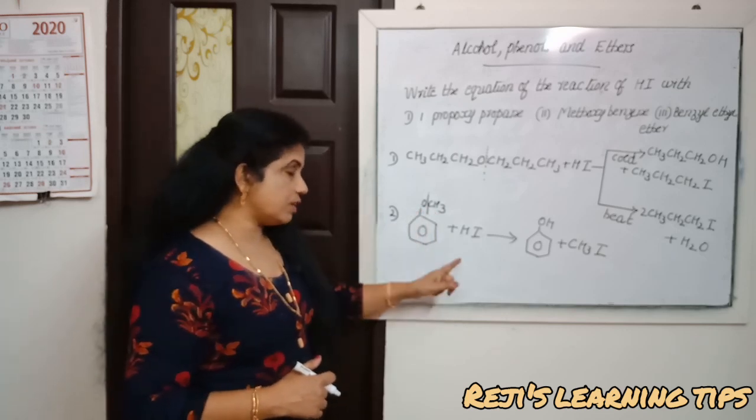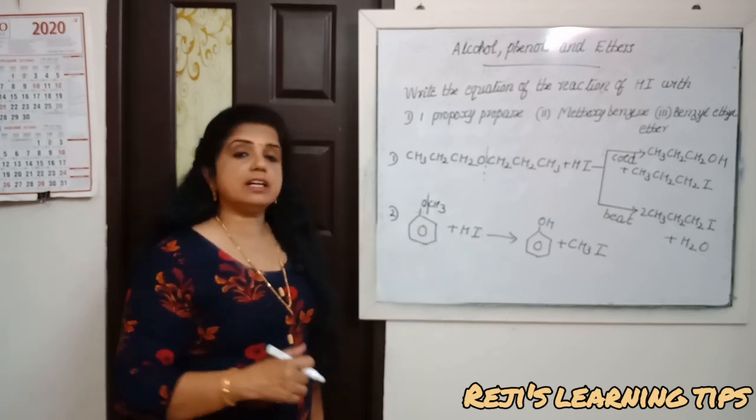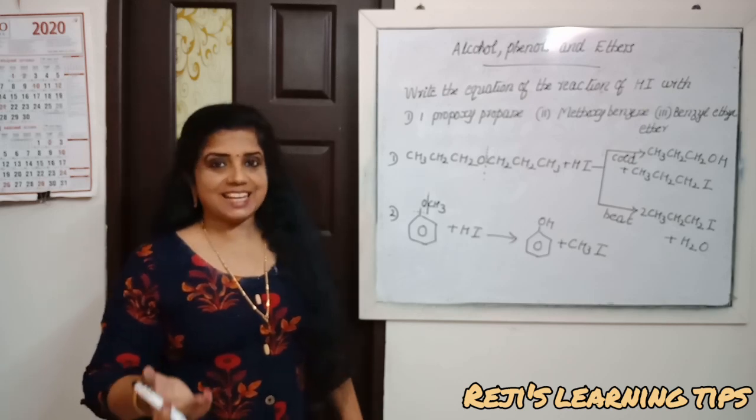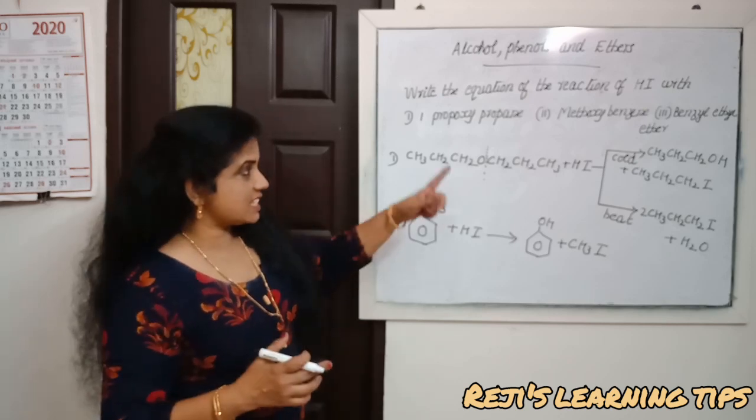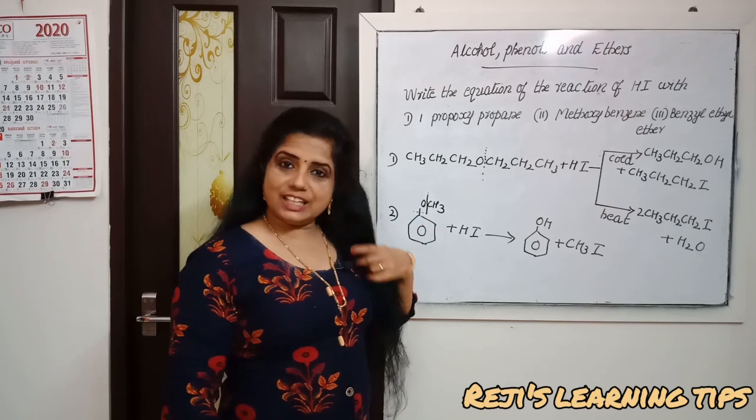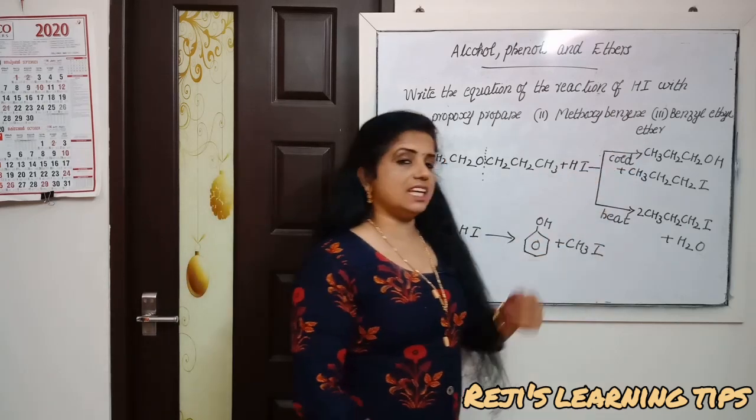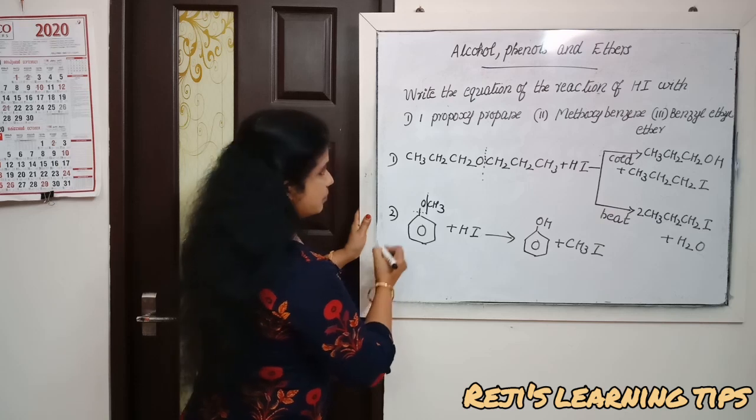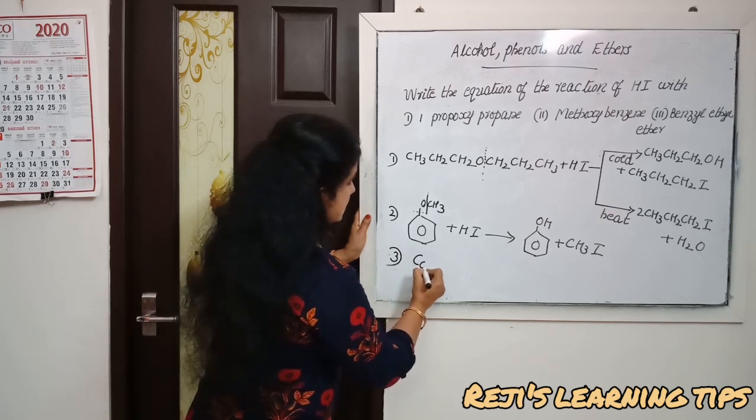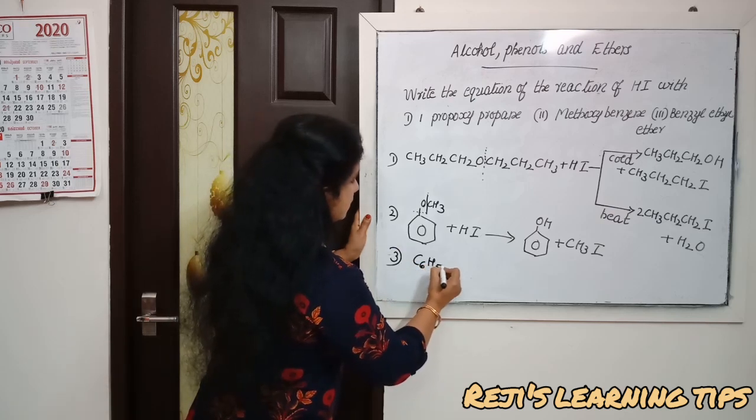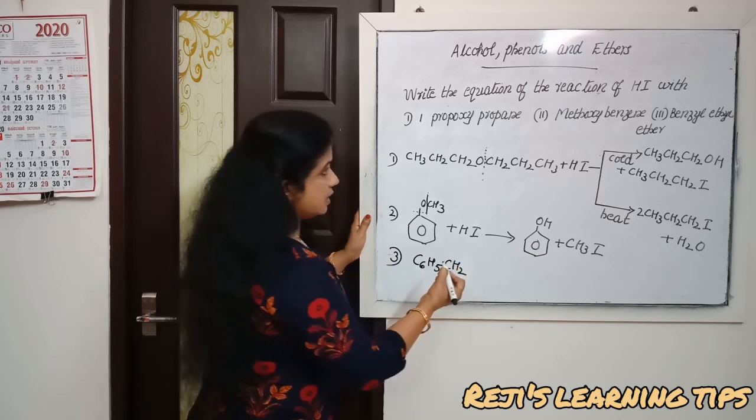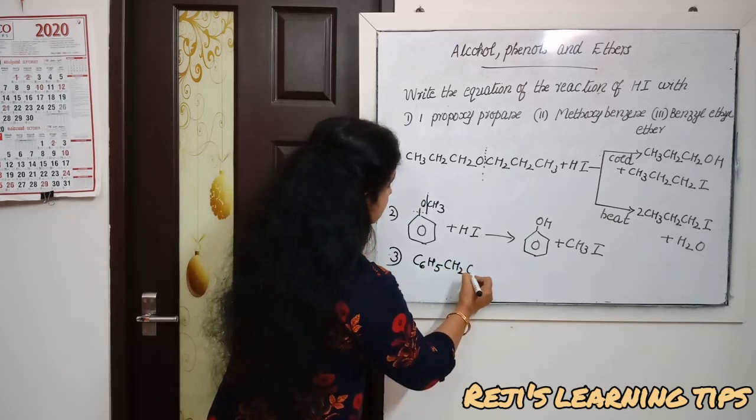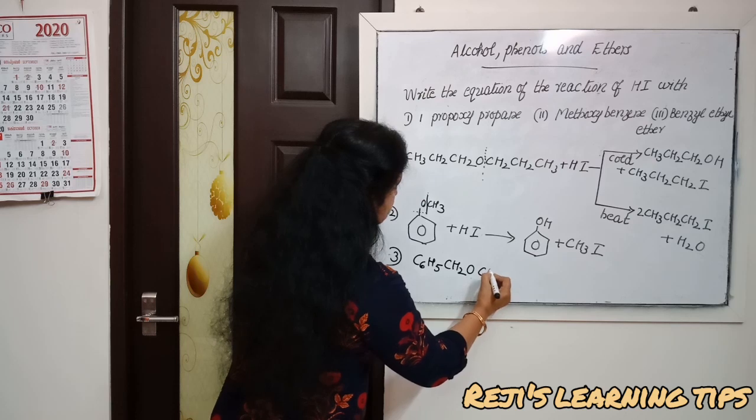The third one is benzyl ethyl ether. Benzyl is C6H5-CH2, then ethyl ether means O-CH2-CH3. It reacts with HI. Can you say how the products are formed?